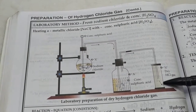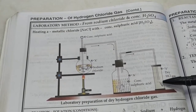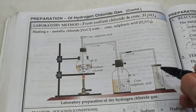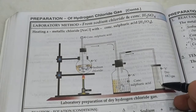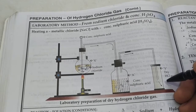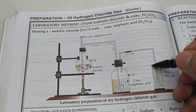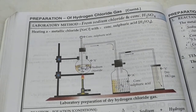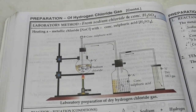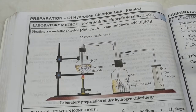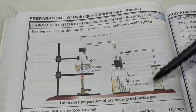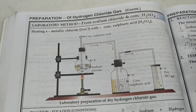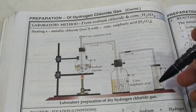HCl gas is quite dense — heavier than air — so it is collected by the upward displacement of air. As HCl fills the jar, the air previously present is pushed out. We can confirm the jar is filled with HCl gas by doing a test: dip a glass rod in ammonium hydroxide solution and bring it near the HCl. You will get dense white fumes, because ammonia reacts with HCl to form ammonium chloride.